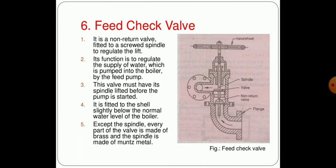Now what is the feed check valve? Another type is the non-return valve type, functioning and fitted to the screw spindle of the rectangular lift. The main function of this valve is to supply the water which is pumped into the boiler, particularly into pressure tube boilers. This valve must have the spindle lifted before the pump. It is fitted to the shell slightly below the normal water level. Except the spindle, every part of the valve is made up of brass, and the spindle is made up of gun metal.